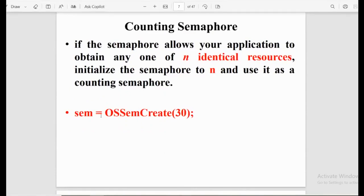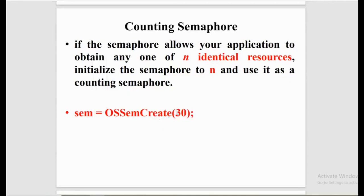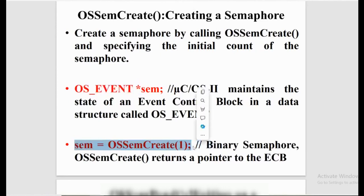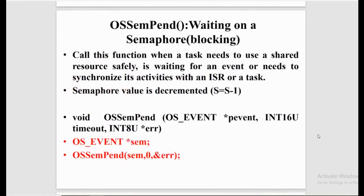For example, 'sem = OSSemCreate(30)' creates a counting semaphore with a count of 30. The semaphore is created by calling OSSemCreate, and the programmer specifies the initial count. In the example, the semaphore is declared as a pointer to the OS_EVENT data structure, and in the second line we create a binary semaphore by calling OSSemCreate.